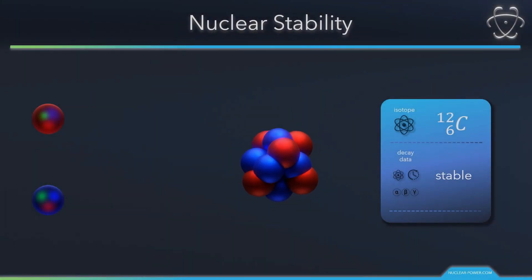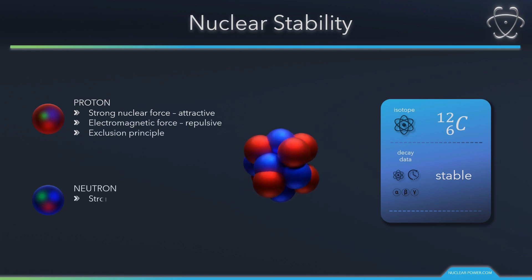Hi, in this video, we will explain why some nuclei are stable while other nuclei decay or even split. The concept of nuclear stability is essential for understanding radioactivity and nuclear fission. Please, give us a few minutes of your attention.